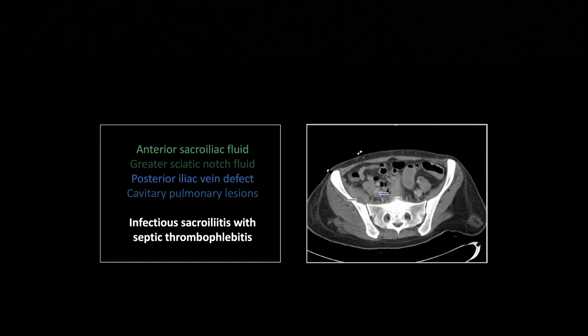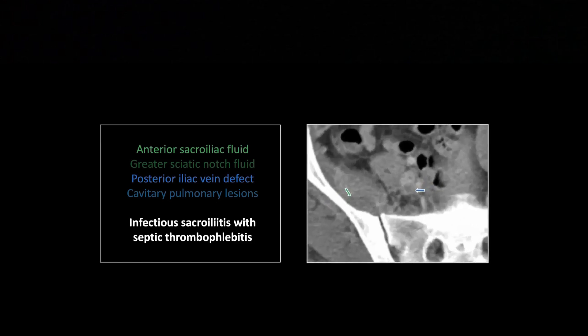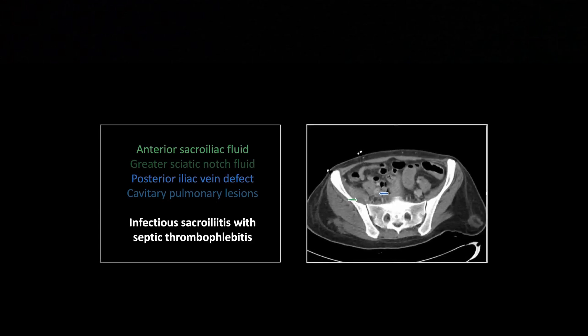The other finding here is a filling defect in the posterior iliac vein right at the bifurcation of the common iliac vein. There it is — you can just see that filling defect, that rounded thing in the posterior aspect of the common iliac vein, bifurcating right at that point.